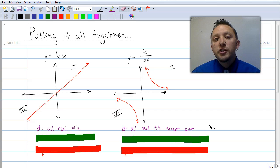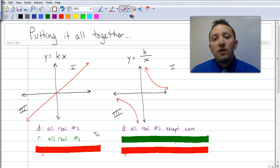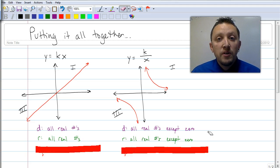So think about the range. The range in that first graph. Well, it goes infinitely up and it goes infinitely down. So the range there is also going to be all real numbers. What's the range in the second graph? It's all real numbers except zero.